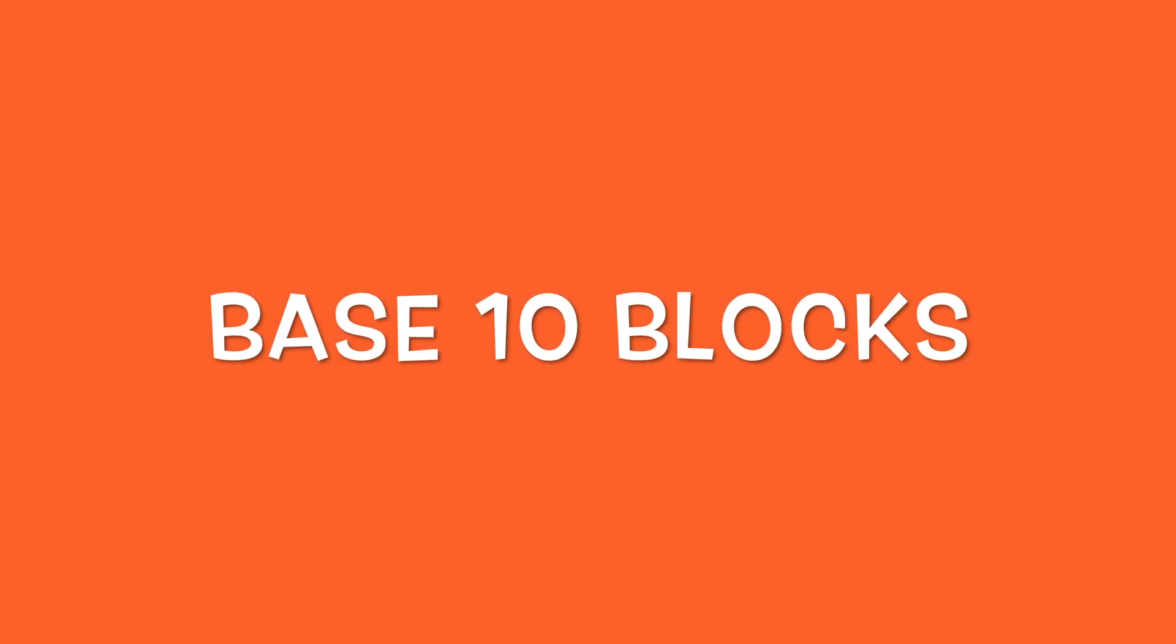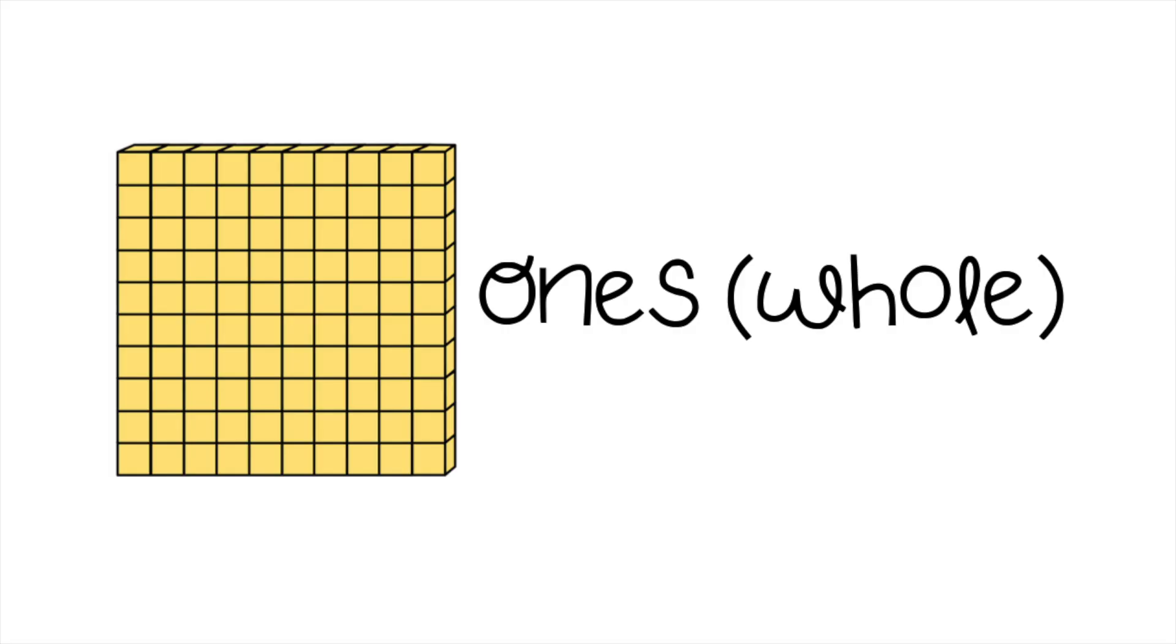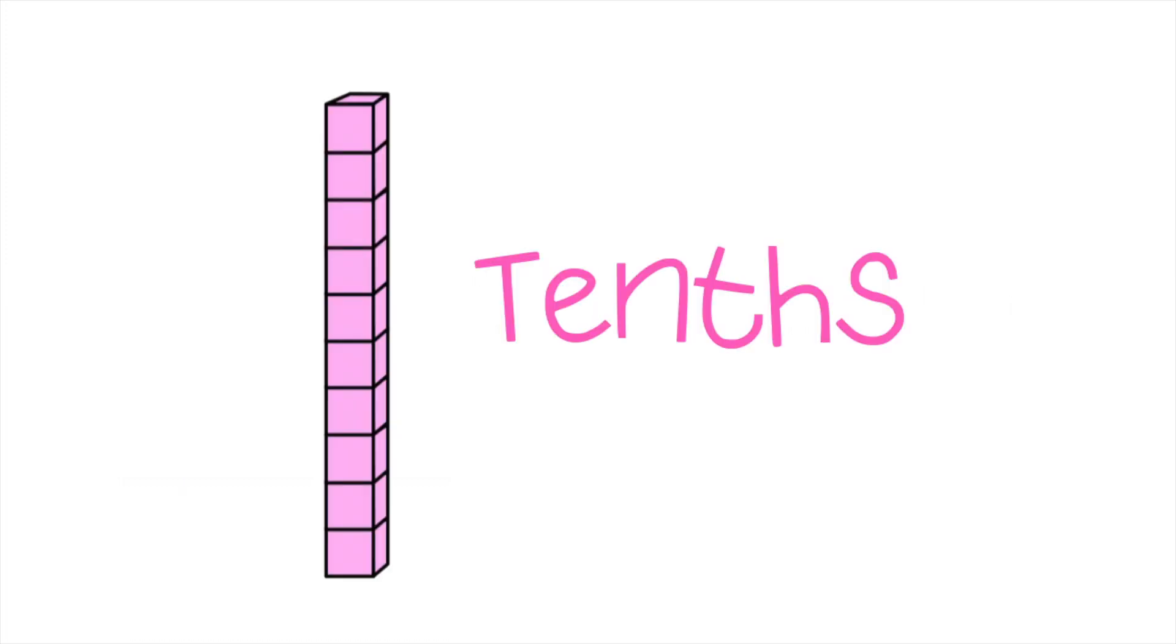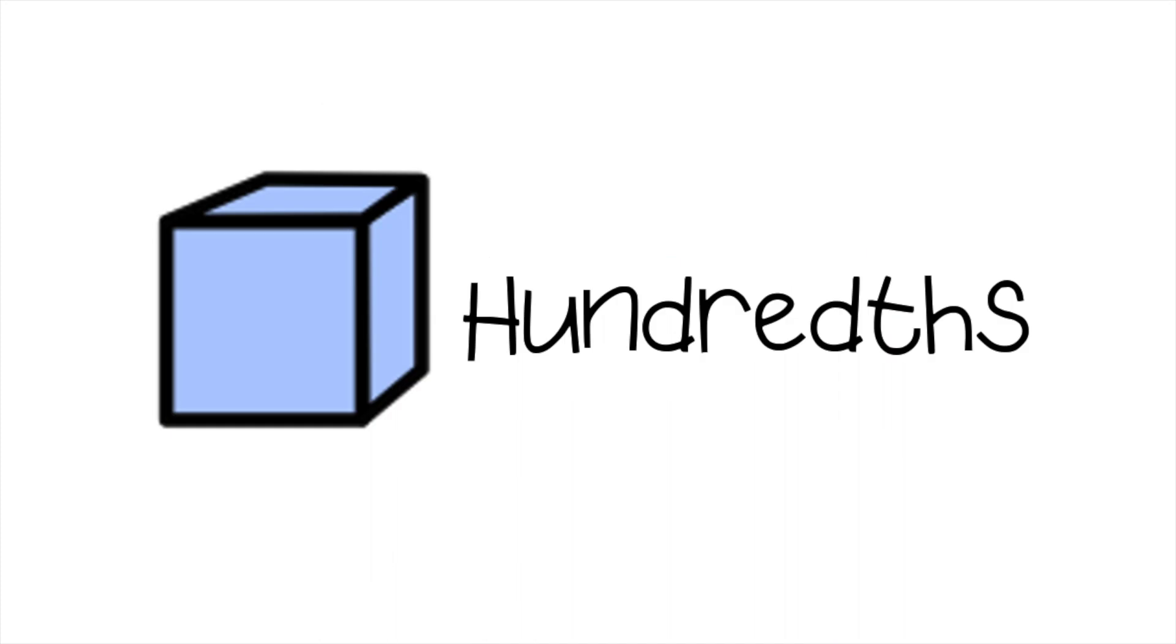One strategy that I'm going to show you is adding decimals using base 10 blocks. This is going to represent the ones or a whole. Tenths represent dimes, if you're talking about money, and it is one-tenth. Hundredths represent the penny, and it takes 100 of these to make a whole.